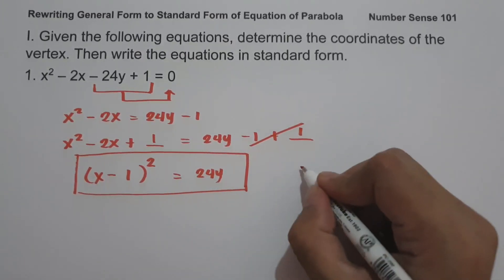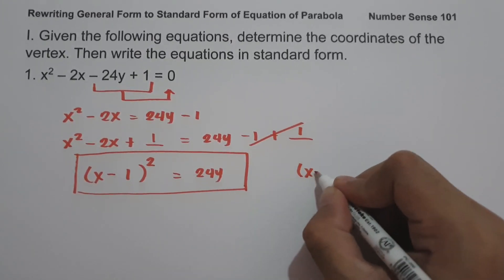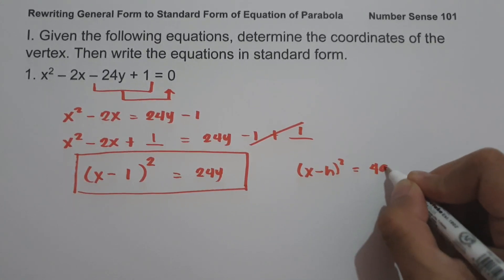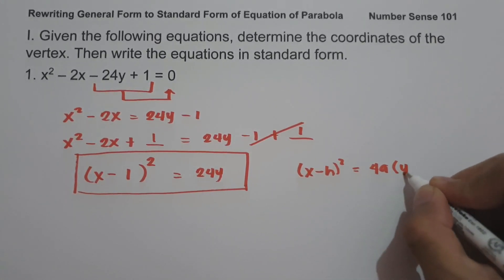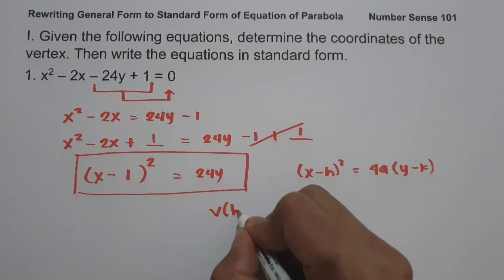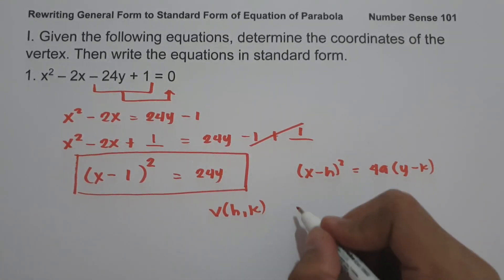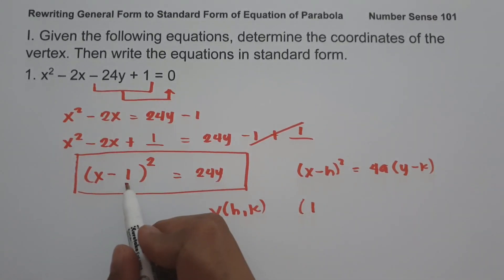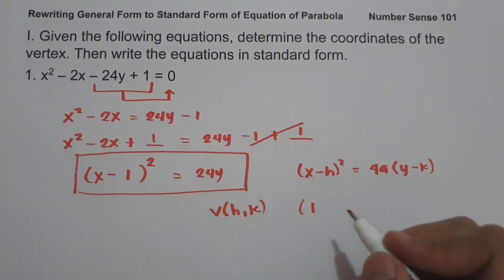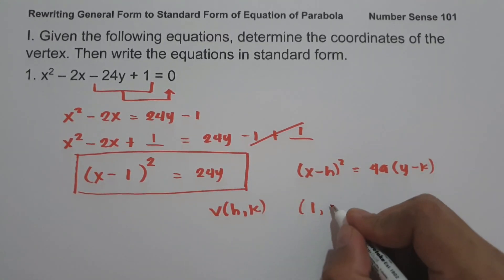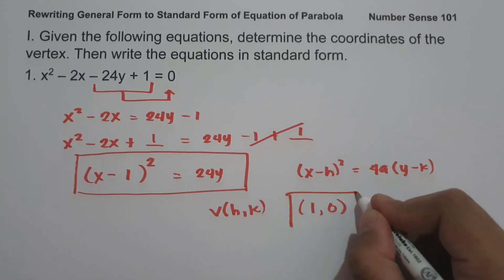Since the given equation is written in the form (x - h)² = 4a(y - k), our vertex is (h, k). The value of h is 1, which is the opposite sign of -1. Since we don't have k in our answer, k is 0. So the vertex is (1, 0).